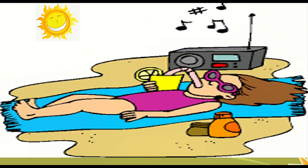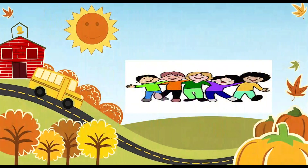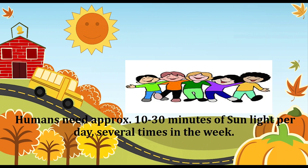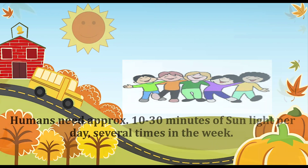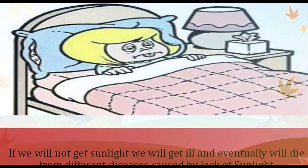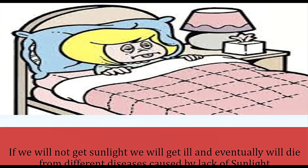Sunlight is the source of vitamin D for us. If sunlight is not there, we have no natural source for vitamin D. A normal person needs 10 to 30 minutes of sunlight every day, several times a week. But if we do not get sunlight, we will get ill and then we will die from different diseases caused by lack of sunlight.